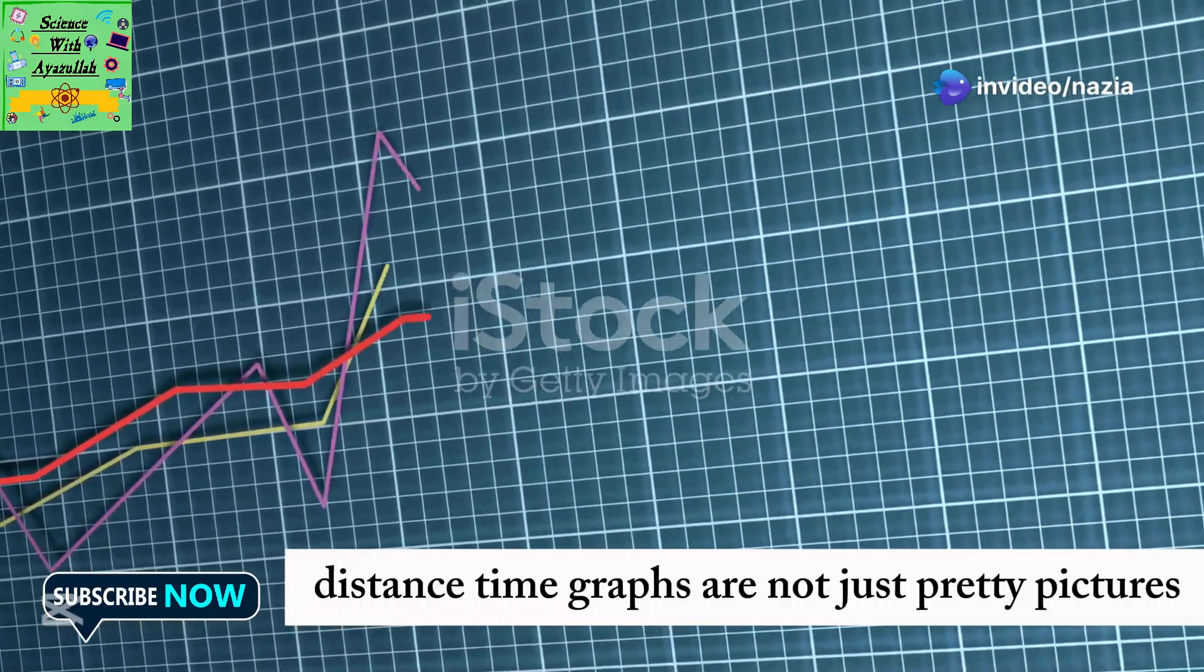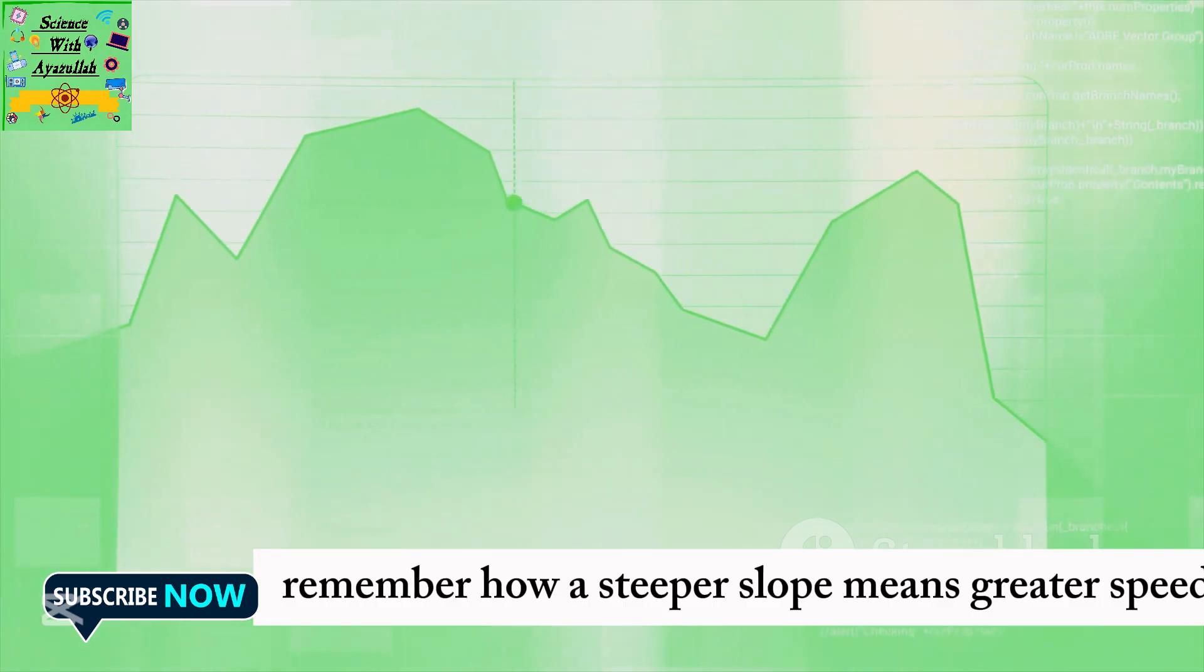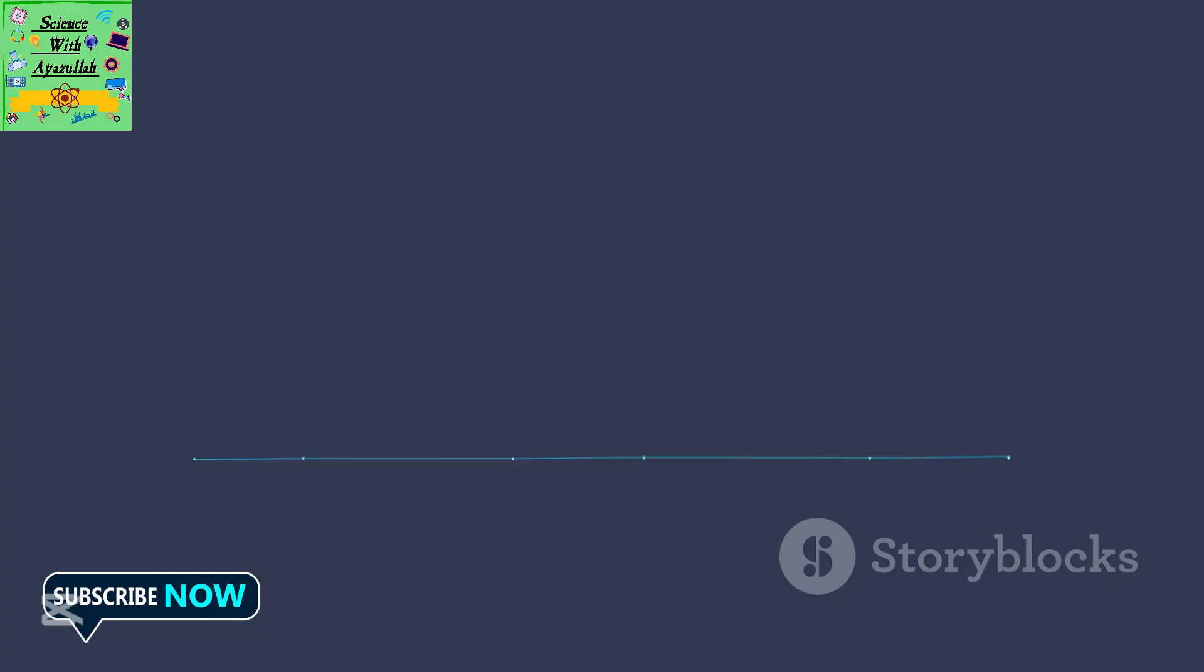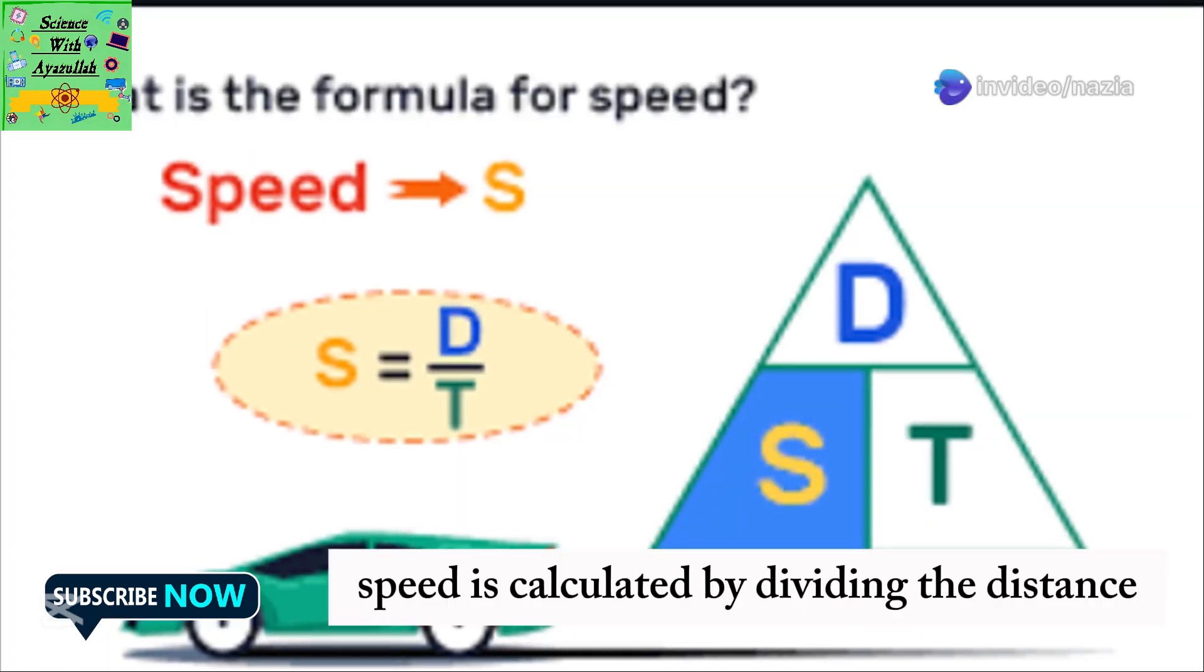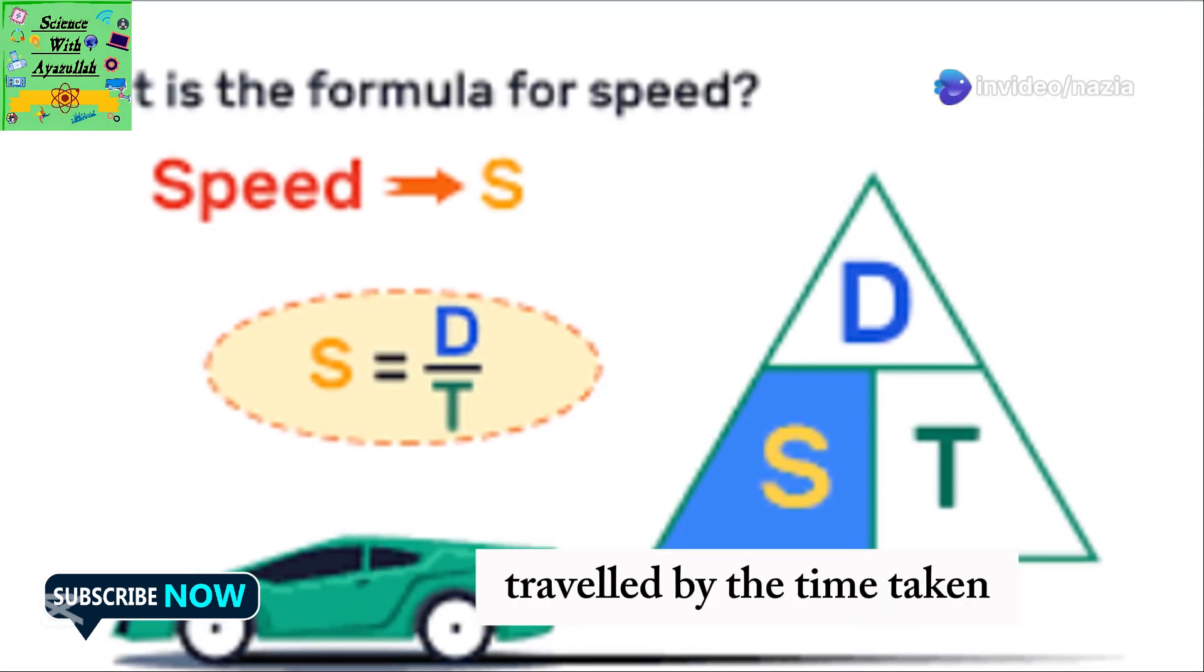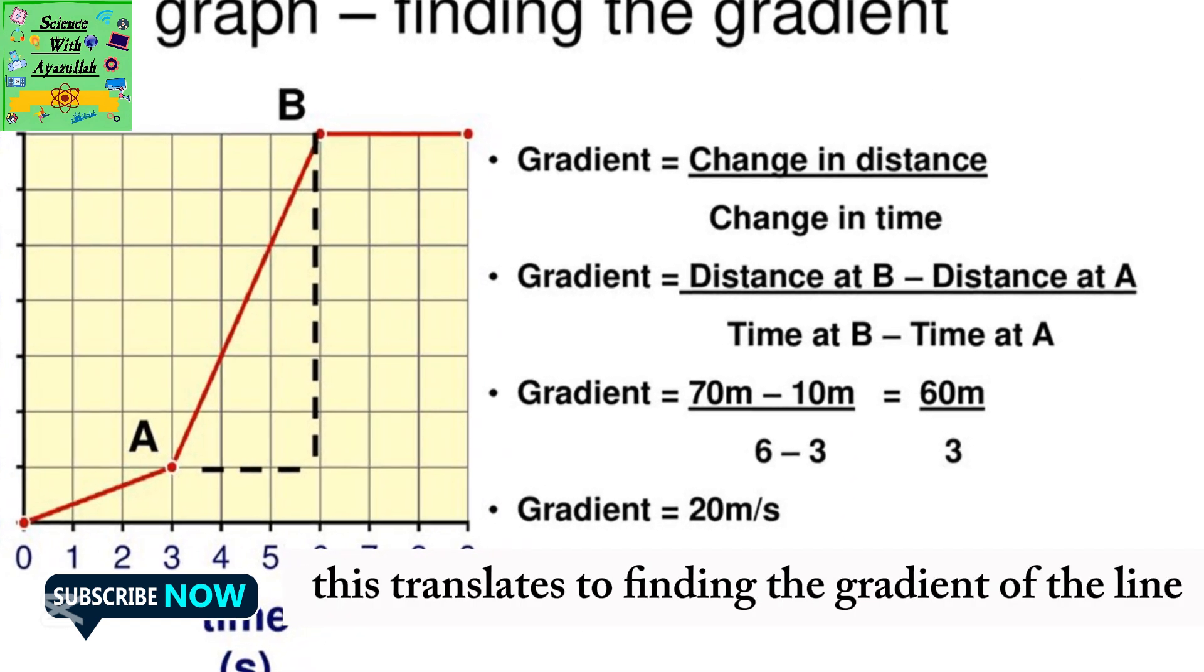Distance time graphs are not just pretty pictures. They're packed with mathematical information. Remember how a steeper slope means greater speed? We can actually calculate the exact speed using the graph. Speed is calculated by dividing the distance traveled by the time taken. On our graph, this translates to finding the gradient of the line.